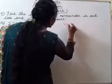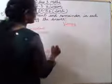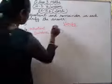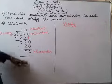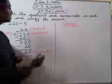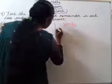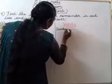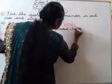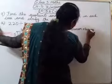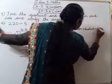Now what we have to do, we have to verify the answer. Yeh karne ke baad hum verify karenge. Just write the heading — verify, or check. Check the answer bhi likh sakte hai, verify bhi likh sakte hai. So iske liye ek formula hai. Dividend is equal to divisor into quotient plus remainder.